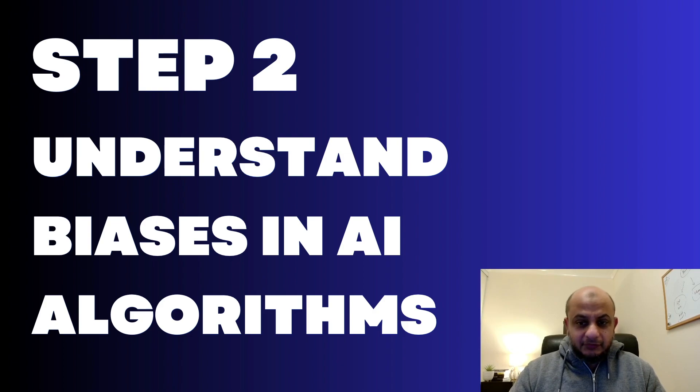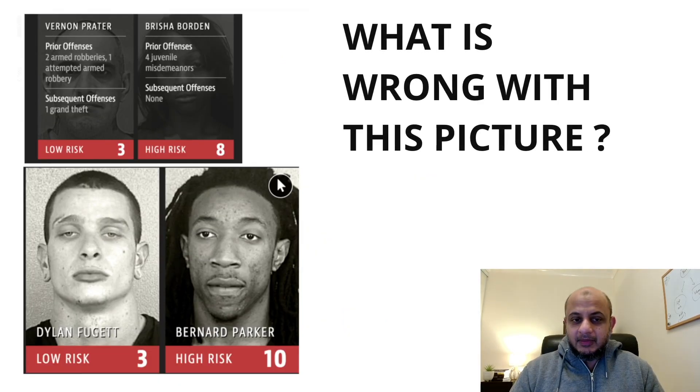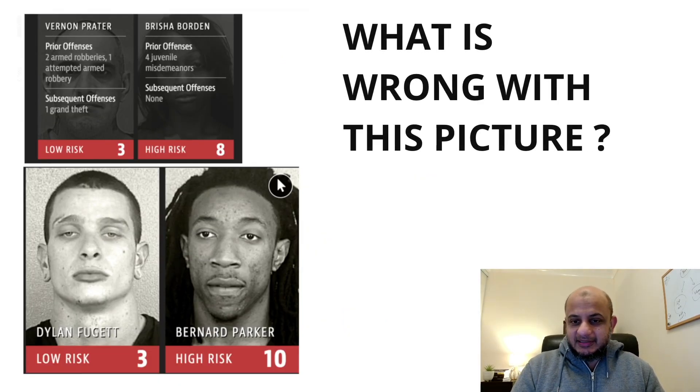So that was machine learning. Now, you have gotten an understanding of machine learning. If you followed step one, step two is you understand biases in AI algorithms. Now, AI can be biased in its decision making. The whole point of AI is you give it an input and output. It understands. And then in the future, it can make predictions. Now, these predictions can actually be biased.